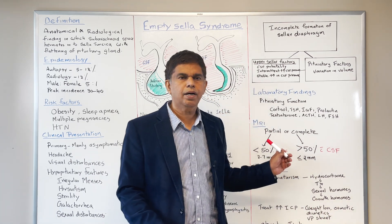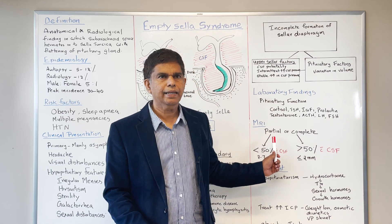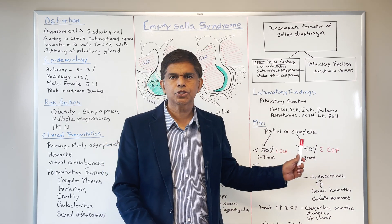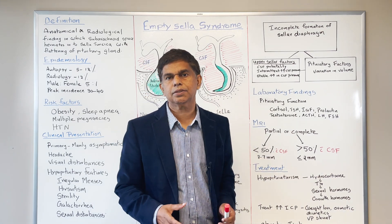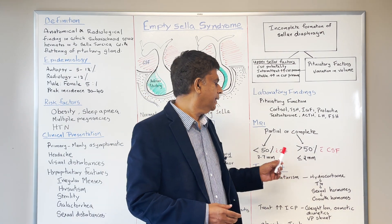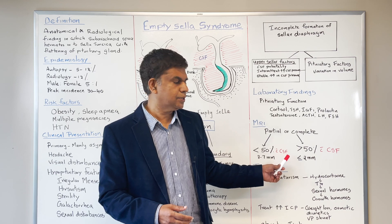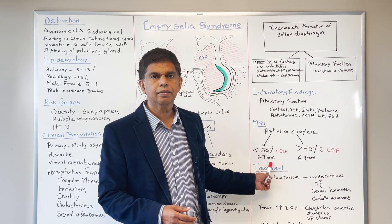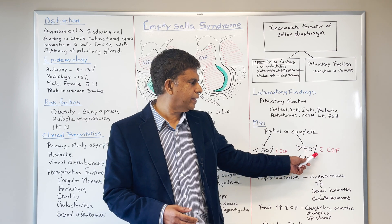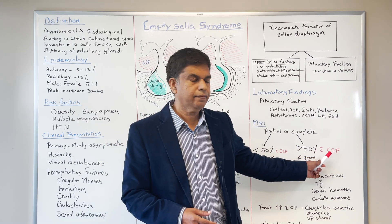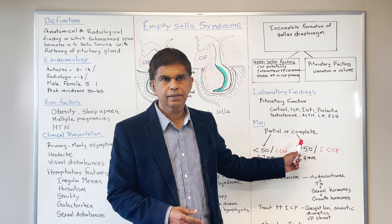When you look at the MRI, findings can be partial or complete depending on the CSF volume. If the CSF fills less than 50% of the sella and the size is around 3 to 7 millimeters, that is called partial. If it is greater than 50% filled with CSF and the size is less than 2 millimeters, that's called complete.